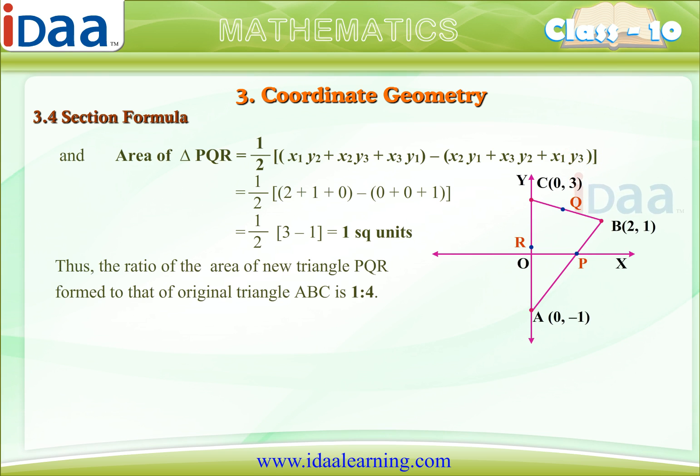Thus, the ratio of the area of new triangle PQR formed to that of original triangle ABC is 1 is to 4.